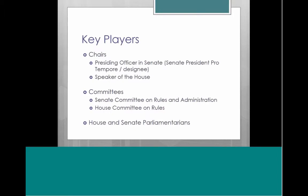Who are the key players when talking about the rules of procedure? A few key players are the chairs. In the Senate, this is the presiding officer — usually the president pro tempore, the most senior member of the majority party, or very often a junior senator designated as chair. In the House, it's the Speaker. The chair plays a very important role: when an issue arises on whether something complies with the rules, they make the initial determination of whether it's in order or out of order.